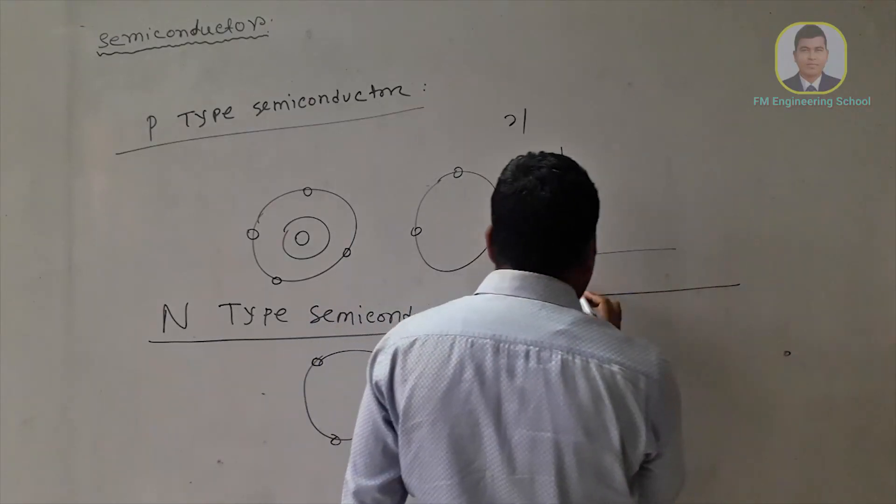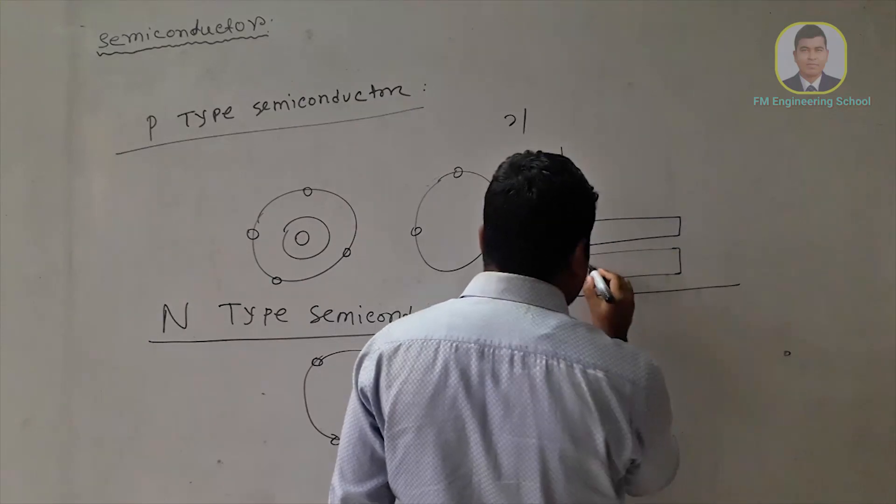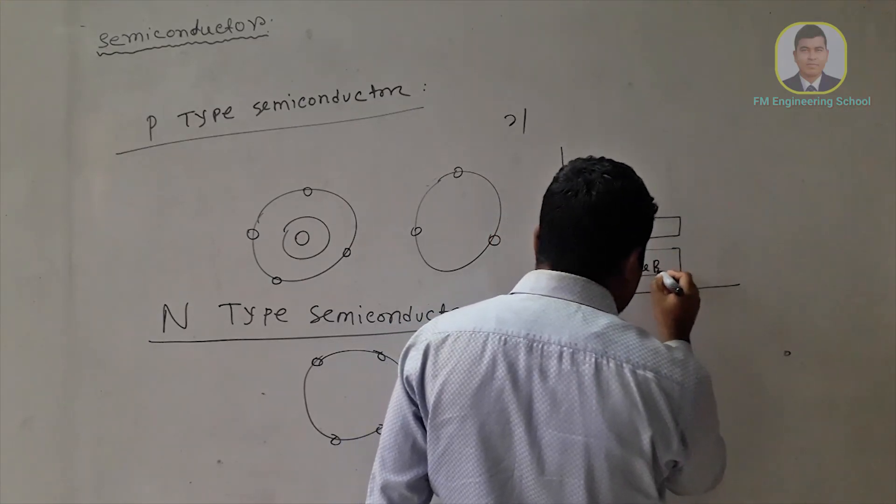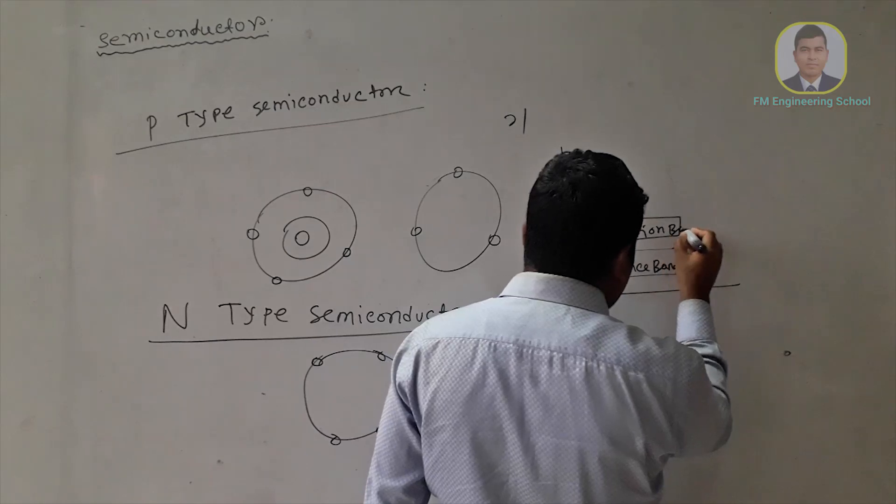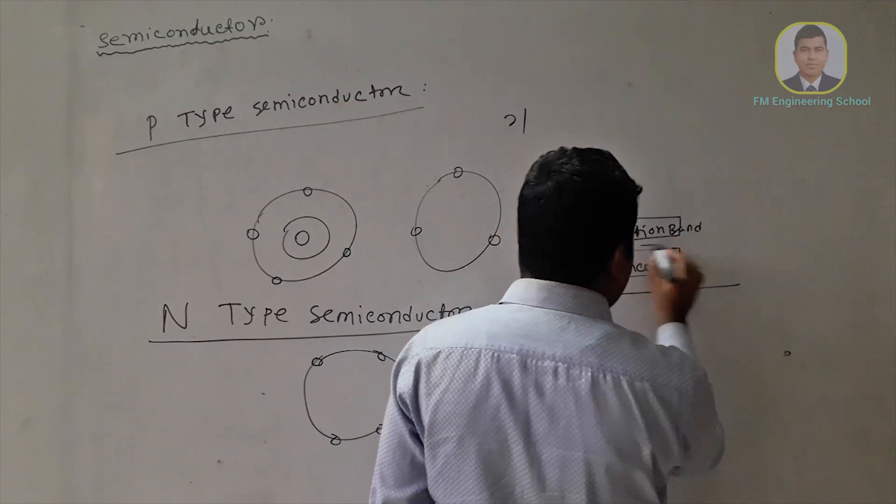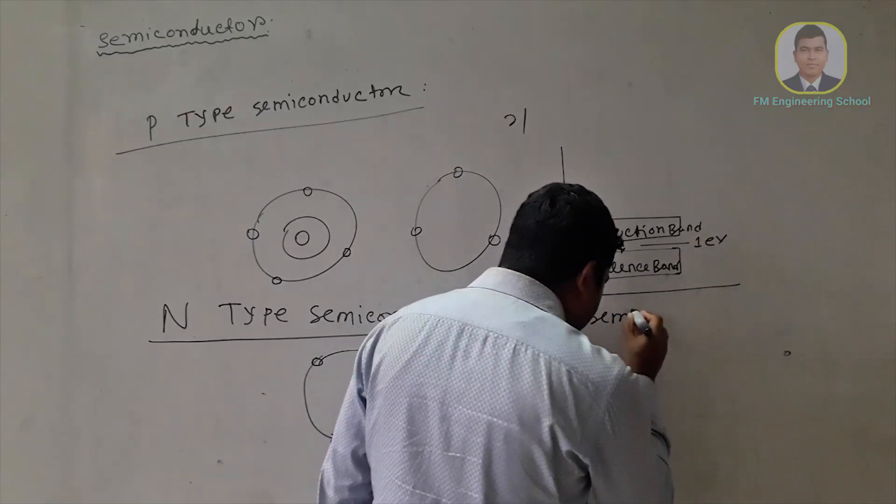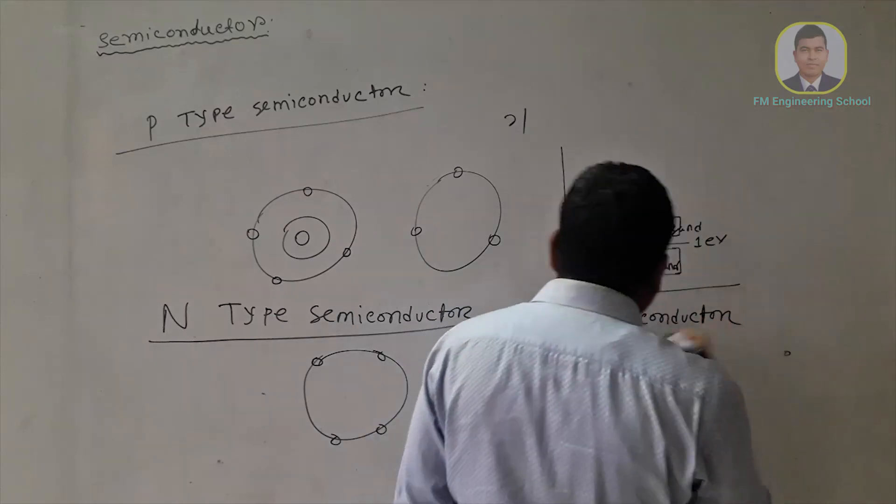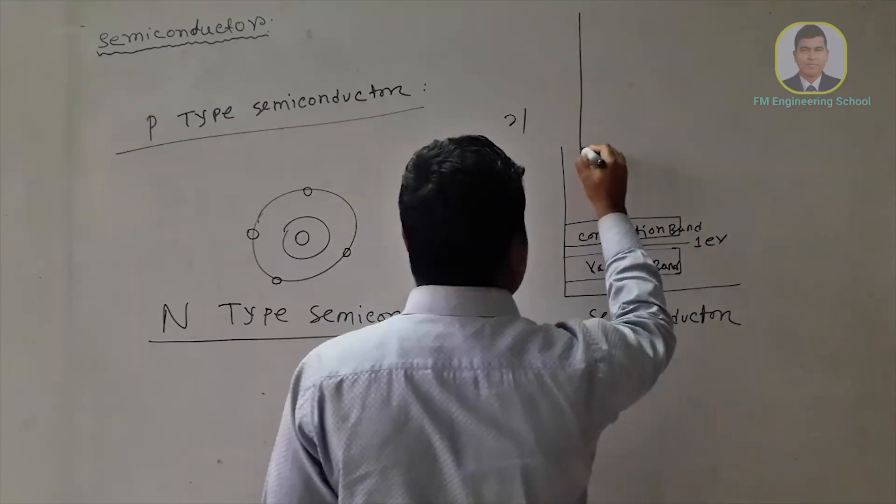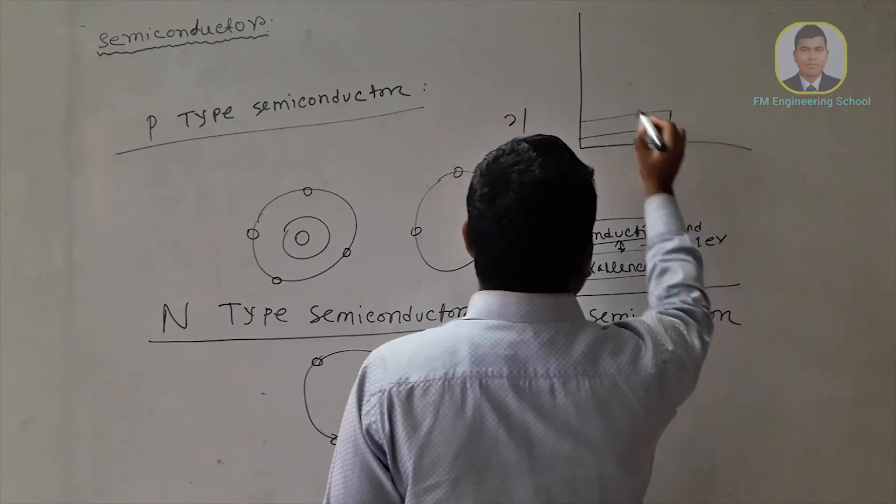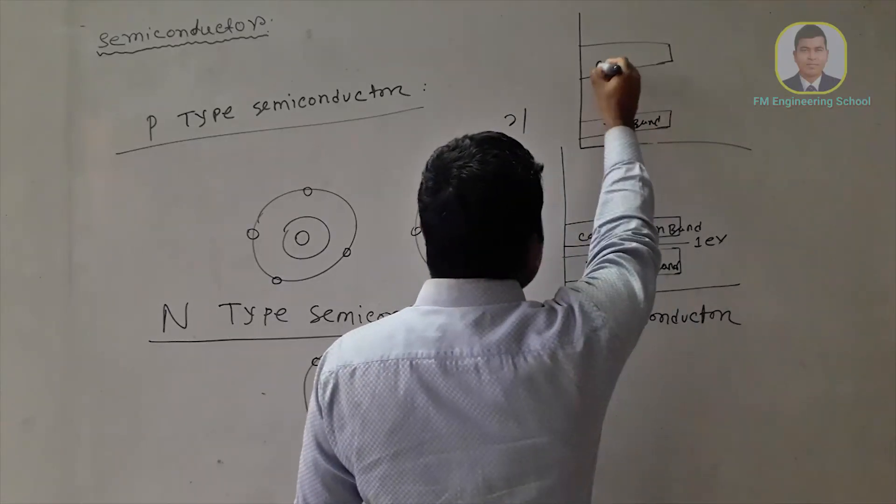The valence band is called the valence band, so the valence band is called the conduction band. This is the valence band, this is the conduction band. This is the energy gap. This is the conduction band, so we have more of the conduction band which is the conduction band. This is the valence band and this is the C band and the conduction band.